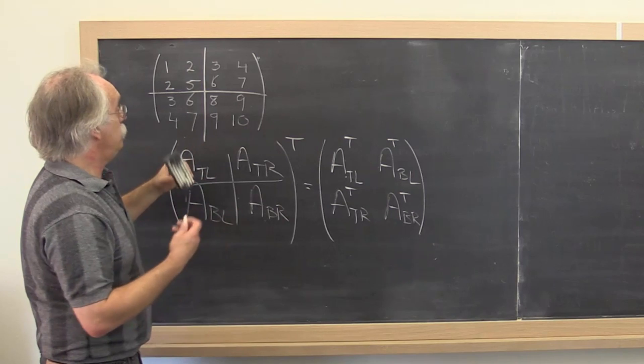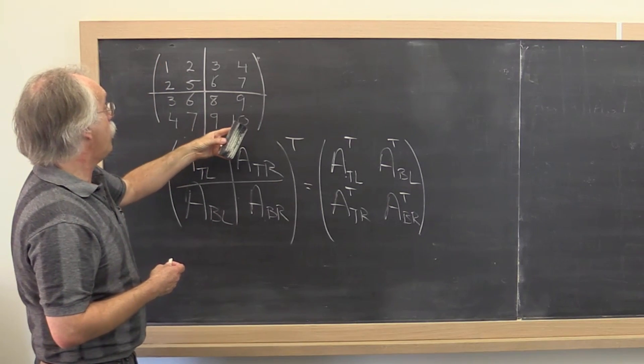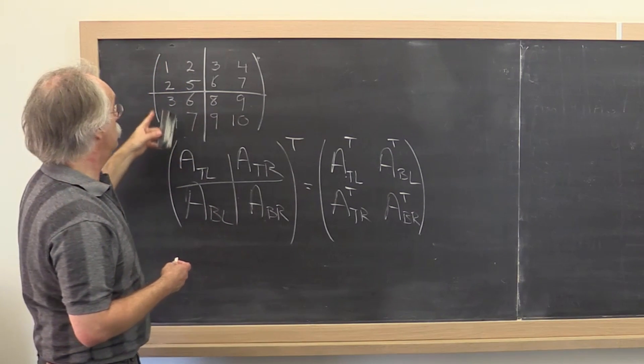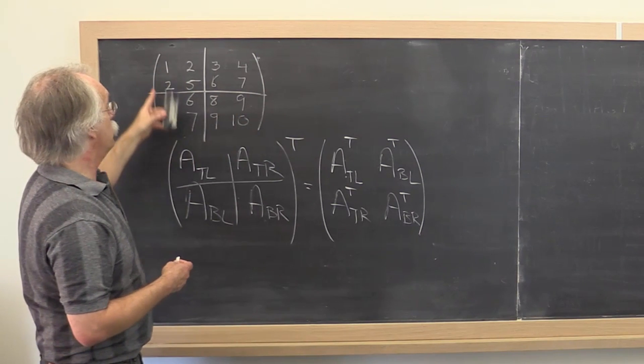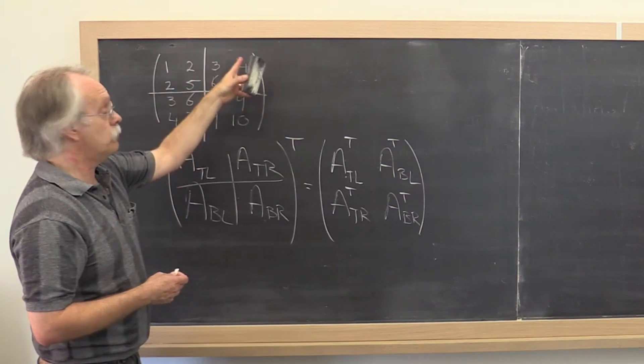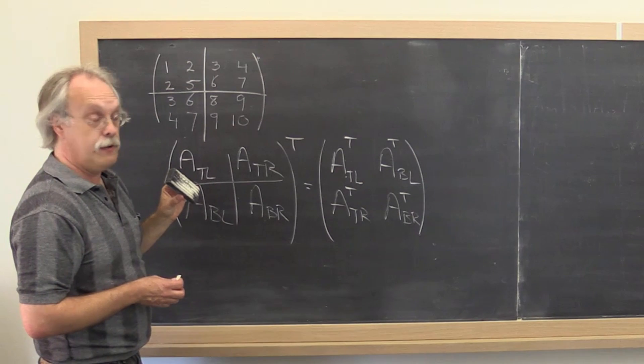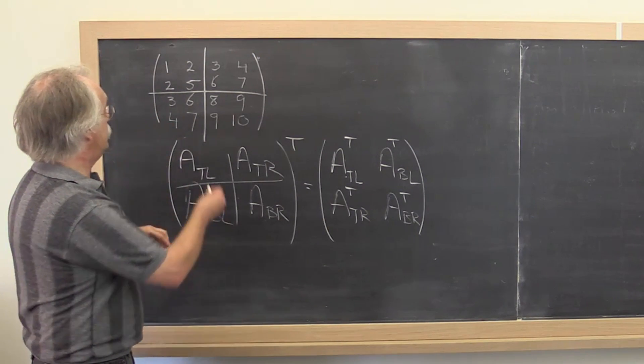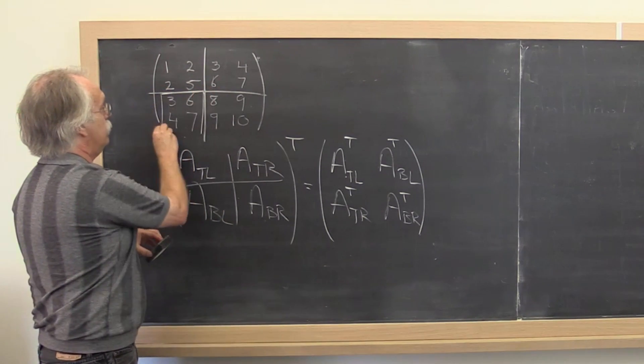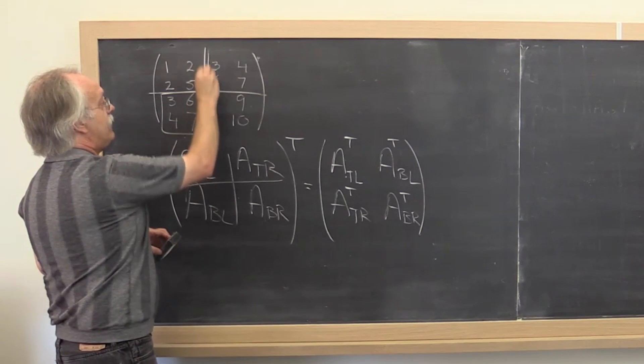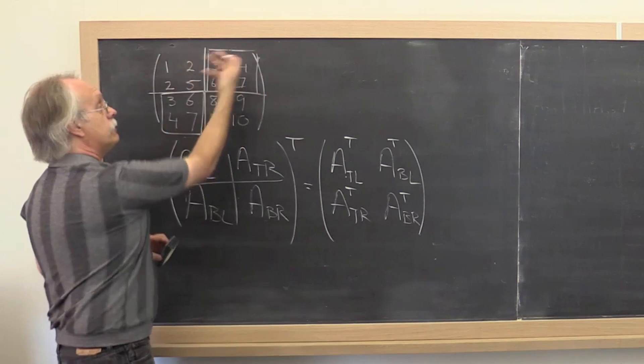So for a symmetric matrix, we only need to store half of the matrix because if you, for example, store the lower triangular part, you can recover what the upper triangular part is. And what we notice is that this submatrix here is simply that submatrix except transposed.